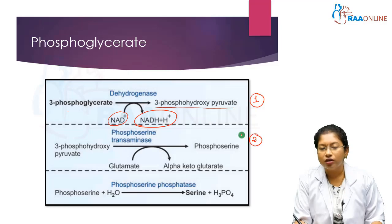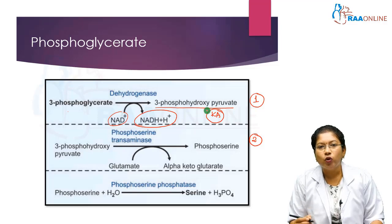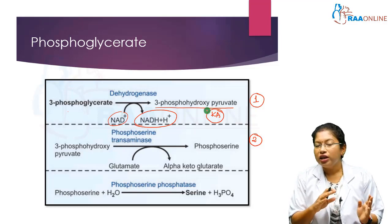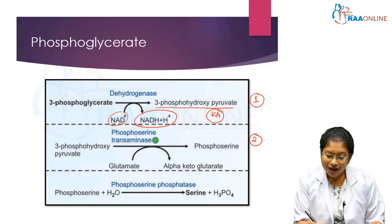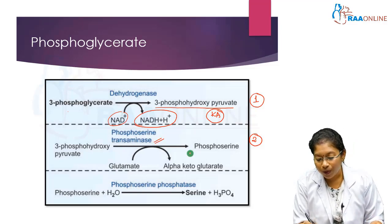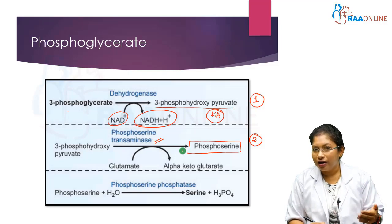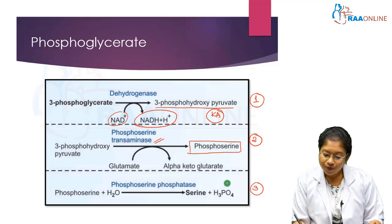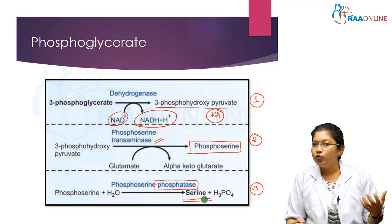The second step is transamination, because 3-phospho-hydroxypyruvate is a keto acid and we need to convert it to an amino acid. Whenever we change a keto acid to an amino acid, the reaction responsible is transamination. The enzyme is phosphoserine transaminase, because the amino acid formed is phosphoserine. For the third step, we need to remove the phosphate group from phosphoserine using a phosphatase enzyme.